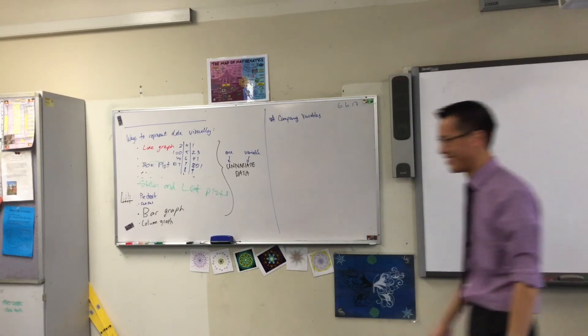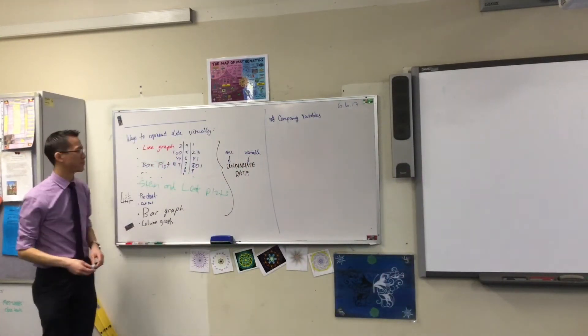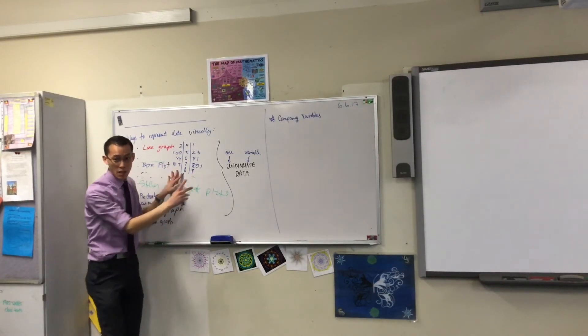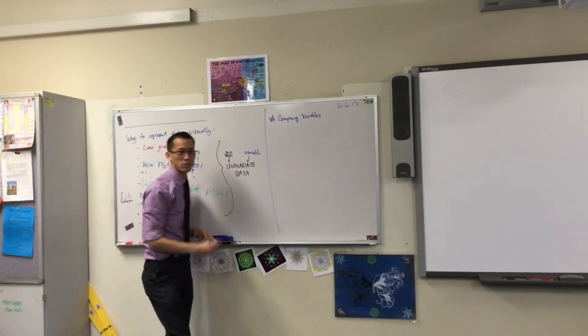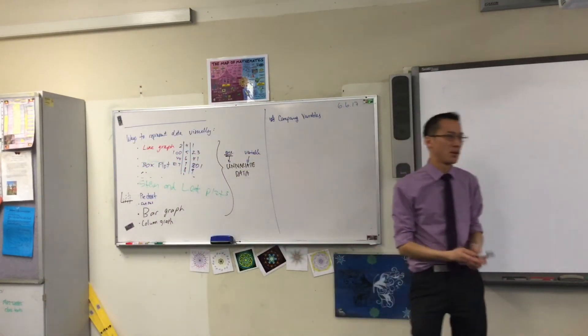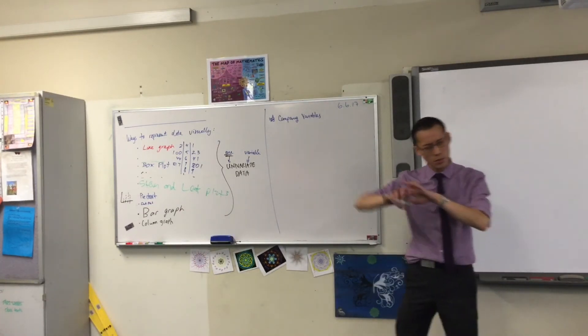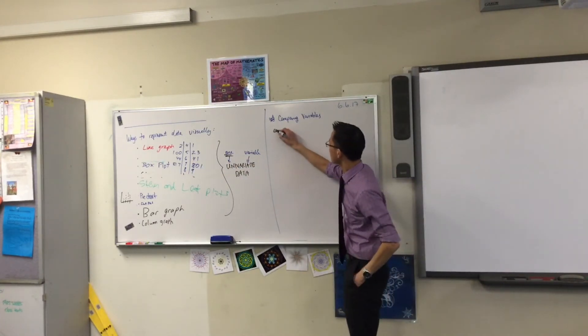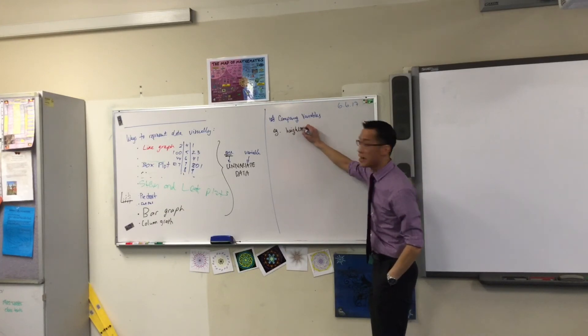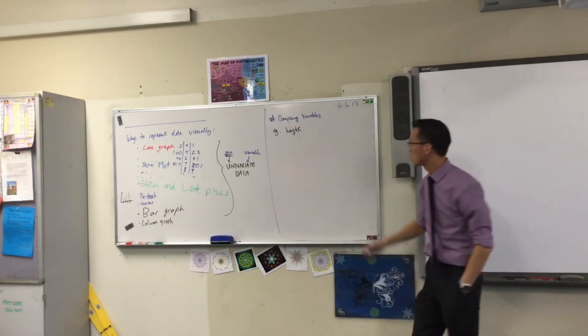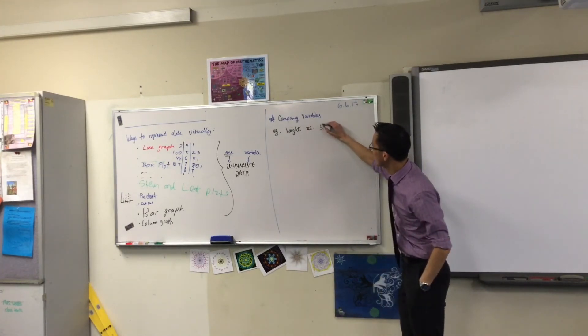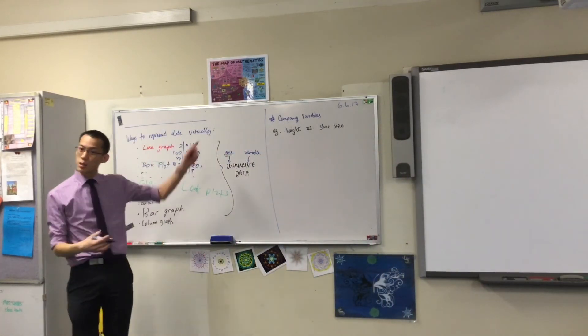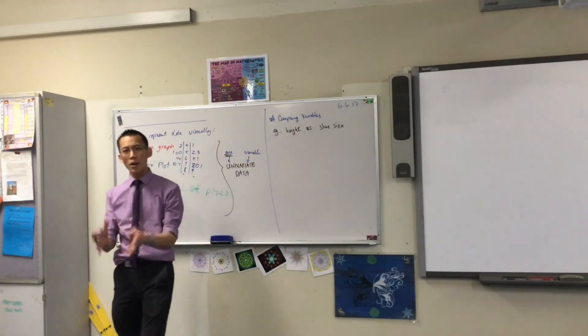You can compare two different teams but you can compare them on one variable, for example the scores that they get per game, or how fast that they can run. So just because you've got two teams doesn't mean you have more than one variable. Let me give you an example. Height. Think about your height. Maybe you want to compare it versus something like say shoe size.